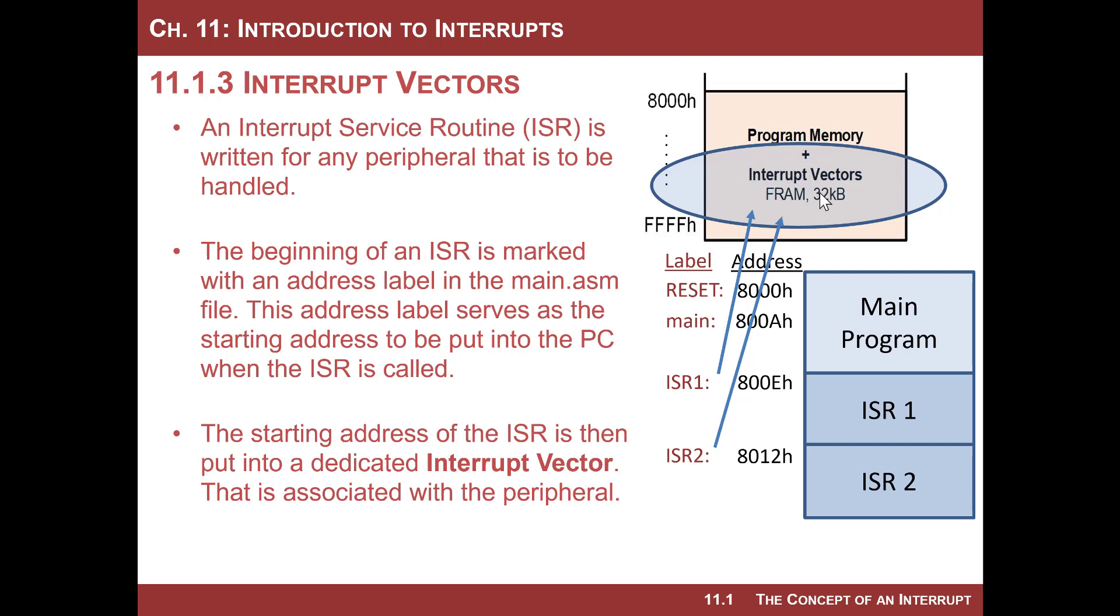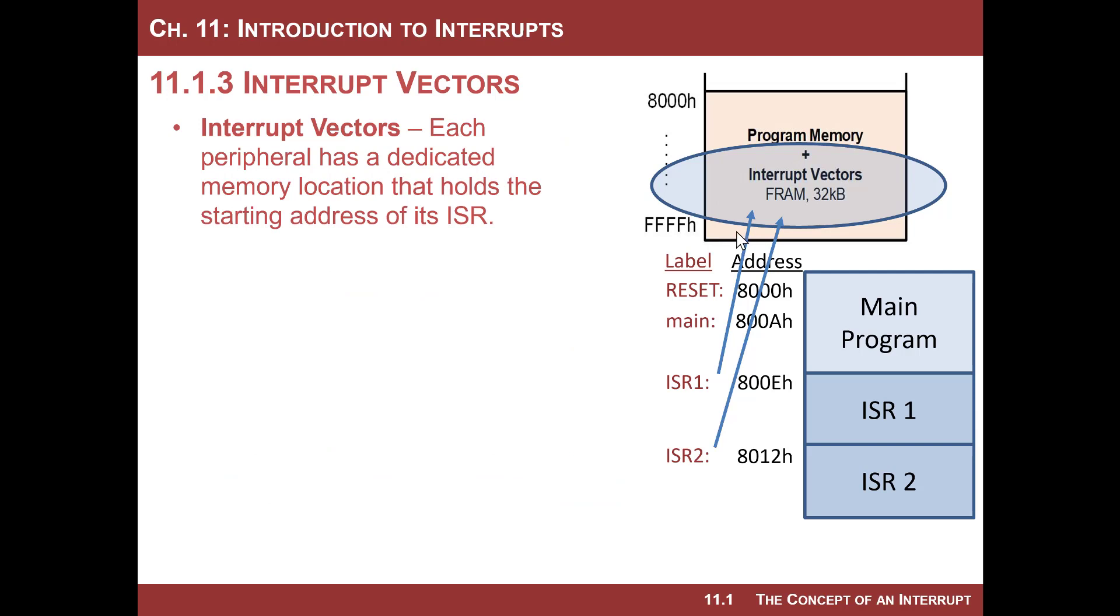A vector is a location in program memory, and it's actually always at the very end of program memory. And what it has is dedicated locations of where you put the interrupt service routine address for each peripheral. You can think of the vector as it's an address pointer. So it's a hard-coded address that sits in this vector space of non-volatile memory, and it's going to be initialized by you when you download to an address that corresponds to the starting address of the interrupt service routine.